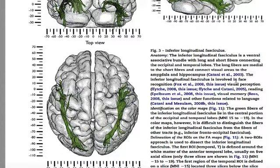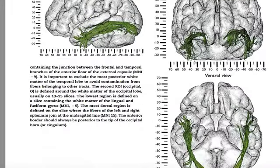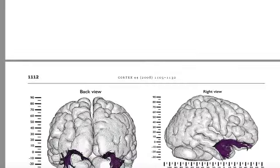It is obviously involved in face recognition — this area is the fusiform gyrus — and this is why it is well known. Here the question arises about the language functions of the inferior longitudinal fasciculus. We see here a sagital vision, a coronal vision, and an axial vision. We note that it does not enter deeply into the temporal lobe.